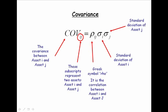On the right-hand side of the equation, we have the Greek symbol rho, which represents the correlation between these two assets. We multiply the correlation between the assets times the standard deviation of asset I, times the standard deviation of asset J.